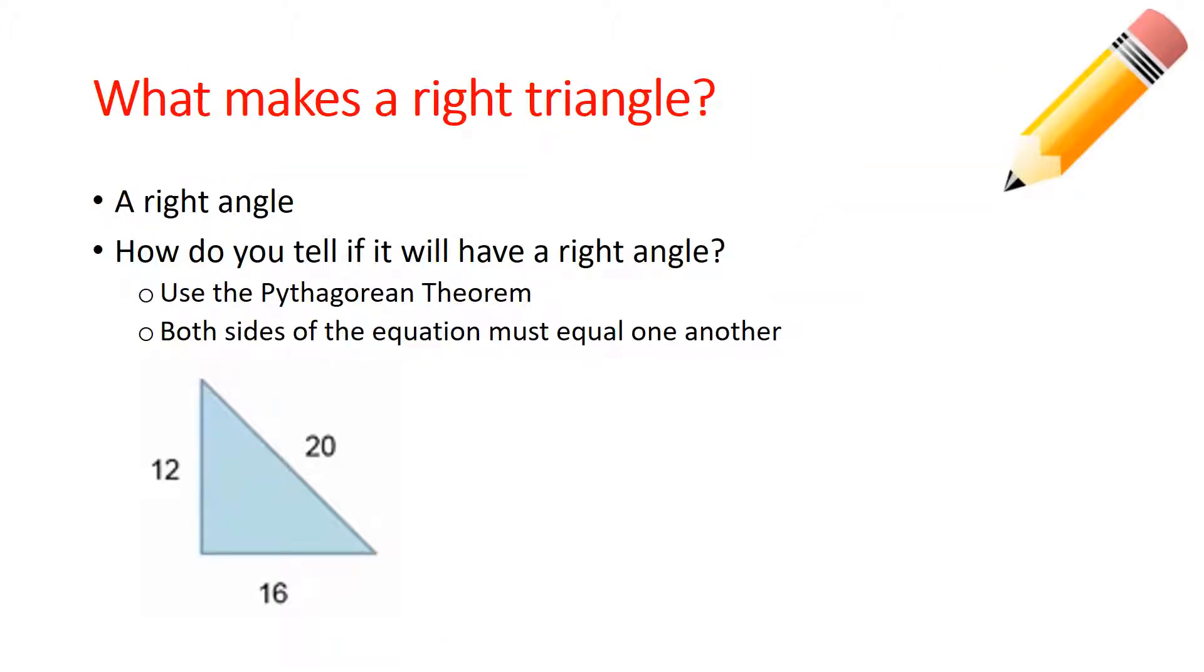How do we know if it makes a right triangle? In order to be a right triangle, we must have a right angle. A right angle means equal to 90. So we need to have a 90 degree angle somewhere in our triangle. How are we going to tell if we are dealing with a right triangle? We're going to use the Pythagorean Theorem. The Pythagorean Theorem is A squared plus B squared equals C squared.